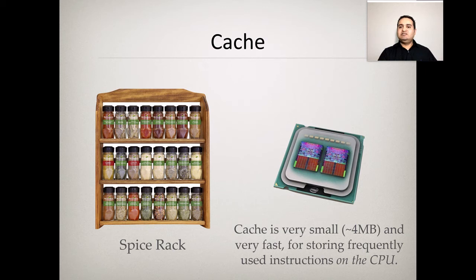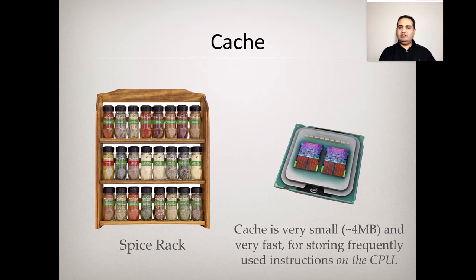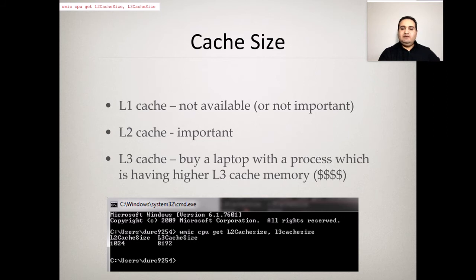When you open a Word document or any software, instructions are saved in cache and RAM where they can be fetched quickly, so the computer will not slow down. Cache can be very small — approximately four megabytes — storing frequently used instructions on the CPU. Cache size can be found using the command code provided in the top left corner of the slide.